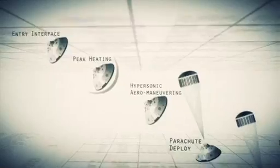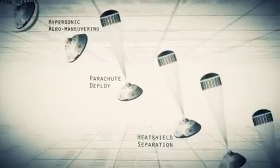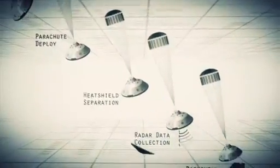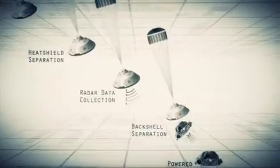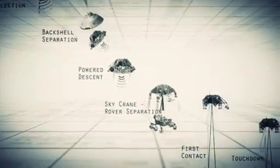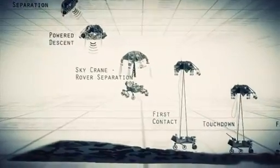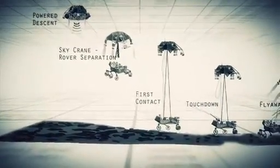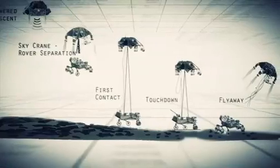Entry, descent, and landing, also known as EDL, is referred to as seven minutes of terror because we've got literally seven minutes to get from the top of the atmosphere to the surface of Mars, going from 13,000 miles an hour to zero, in perfect sequence, perfect choreography, perfect timing, and the computer has to do it all by itself with no help from the ground. If any one thing doesn't work just right, it's game over.